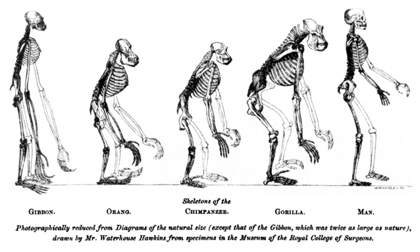Robert MacArthur is best known in the field of evolutionary ecology for his work The Theory of Island Biogeography, in which he and his co-author propose "that the number of species on any island reflects a balance between the rate at which new species colonize it and the rate at which populations of established species become extinct."